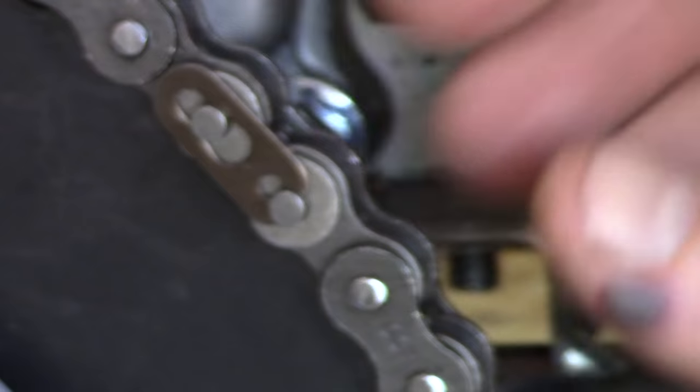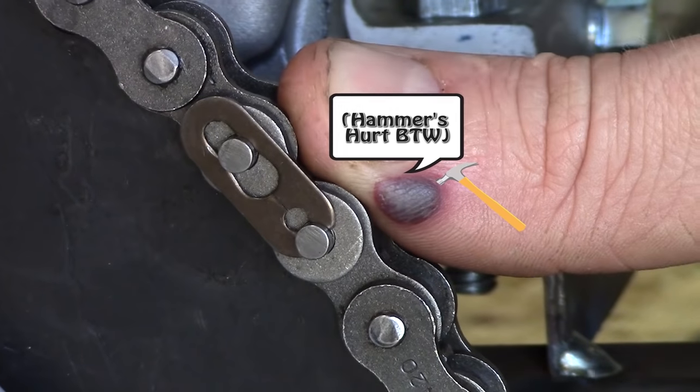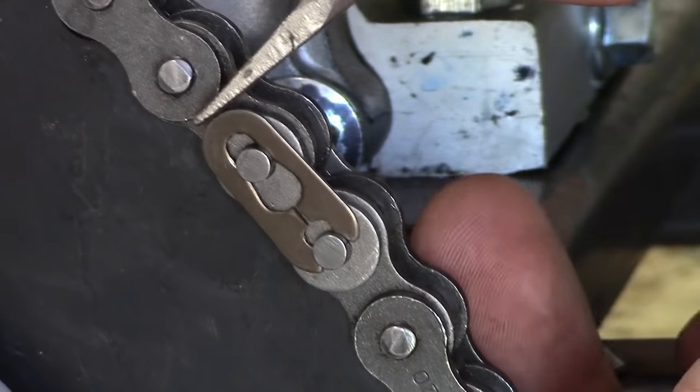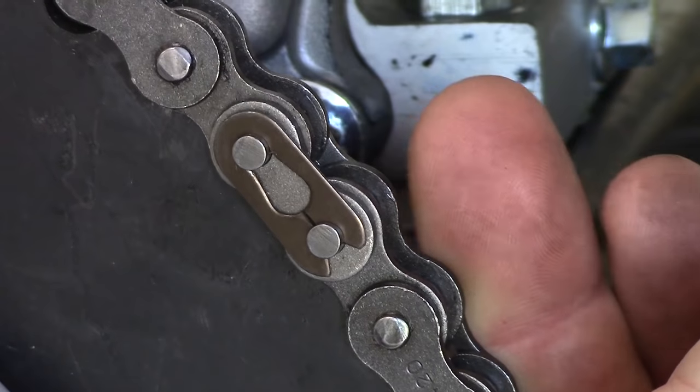You might be wondering to yourself right now, why does this guy have a nasty blister on his thumb? How do I do this without hurting myself? Completely unrelated, but all you got to do is take a flat head screwdriver and it clips right into place.